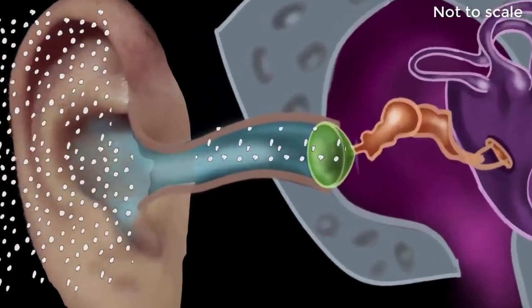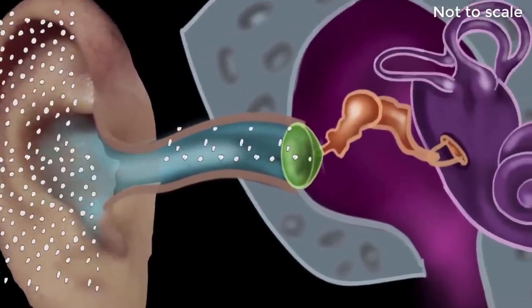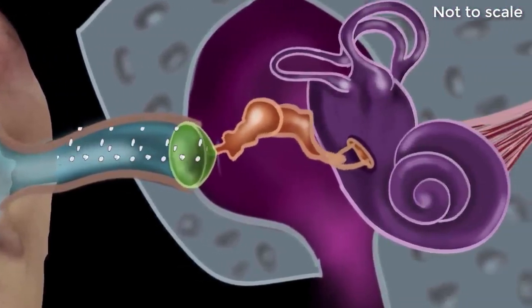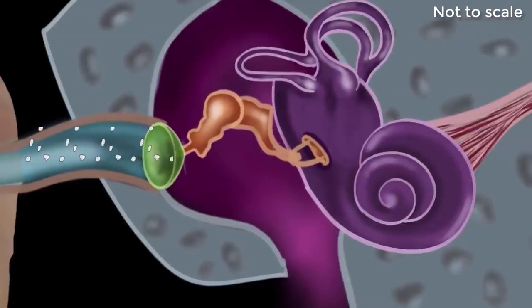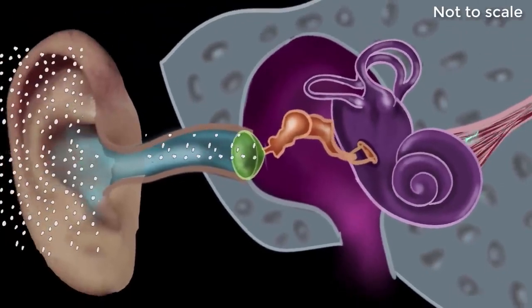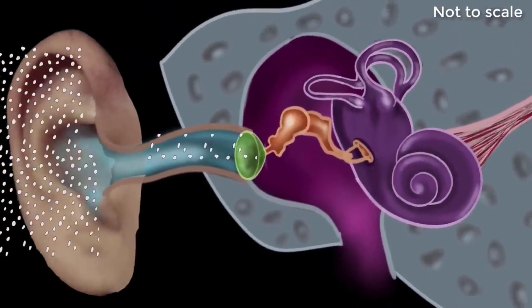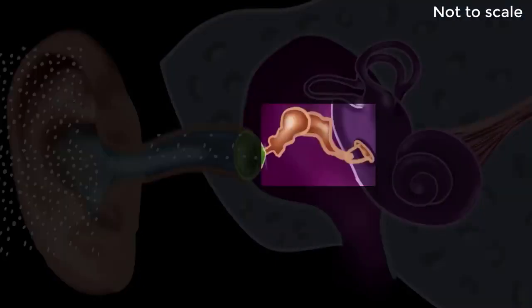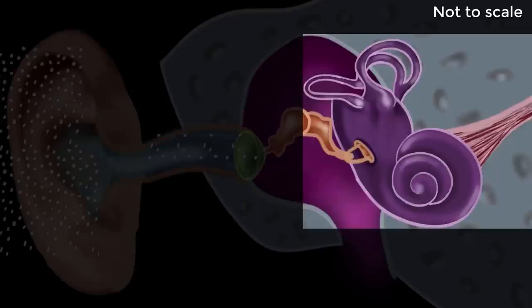So let's look at how the different parts of the ear work together to make us experience sound. Our ear can be divided into three parts: the outer ear, the middle ear, and the inner ear.